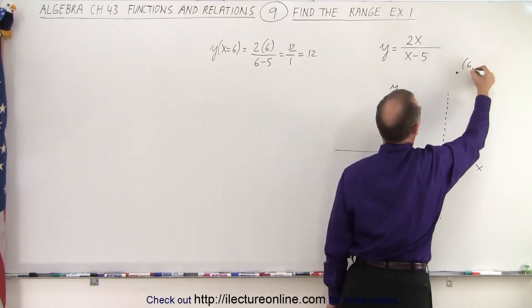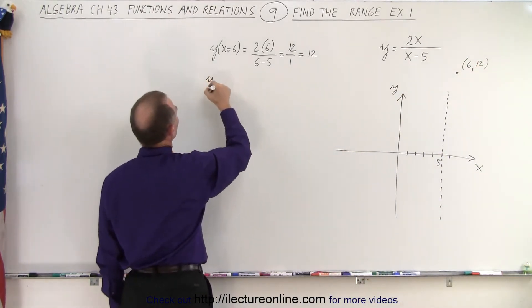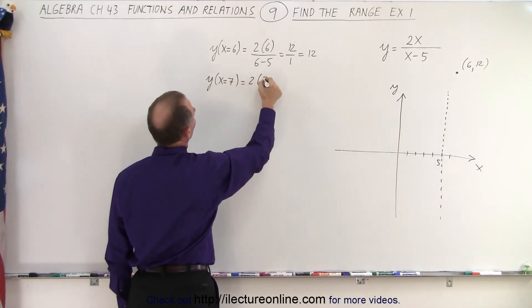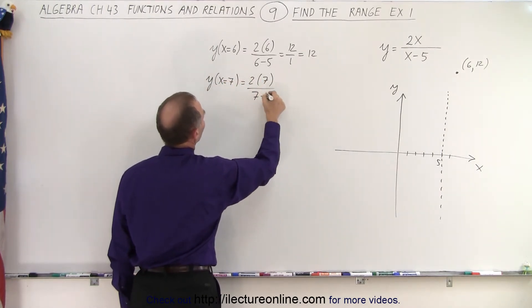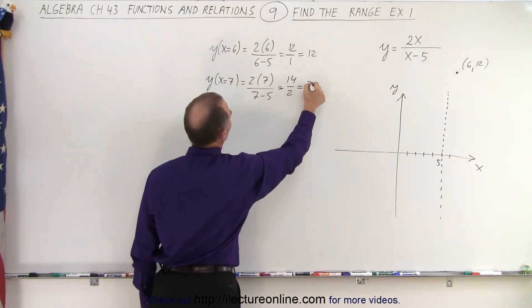So this is the point 6, 12. And then if we try to find y when x equals 7, we get 2 times 7 divided by 7 minus 5, which is 14 divided by 2, which is 7.